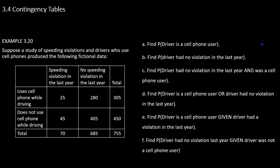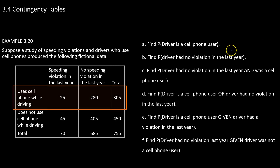Let's get started. If I want to find the probability that a driver is a cell phone user, I look in the row that describes any driver who uses their phone while driving — there's a total of 305. This question isn't asking about violations, so I use all drivers from that row with the total study size as the denominator. The probability is 305 out of 755.